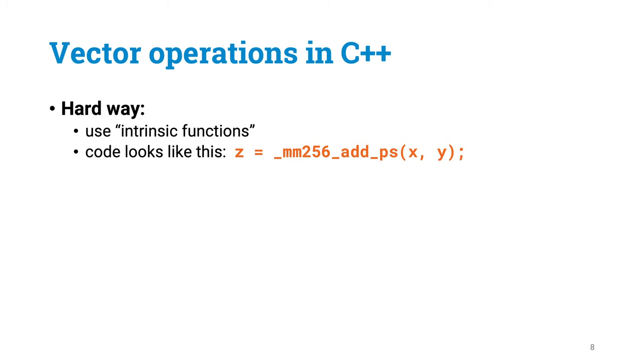But how do we write C++ code that makes use of these highly efficient machine language instructions? There is always a hard way. If you want, you can make your code completely unreadable by using so-called intrinsic functions. But there is fortunately also an easy way. Your compiler can help you. You can define so-called vector types, and then if, for instance, X and Y are defined to be vectors, you can just write X plus Y in your code, and you will get a vector addition. The compiler will generate the right machine language instructions for you.